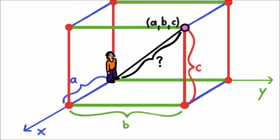This box has width A, length B, and height C. To find the distance from the origin to the point, we can imagine a rope pulled taut across the diagonal of the box from one corner to the opposite. We want to find the length of this rope.